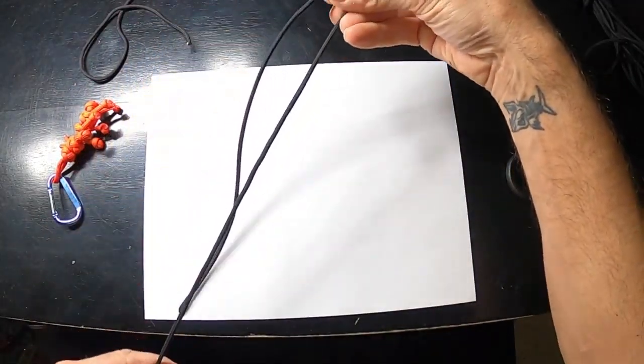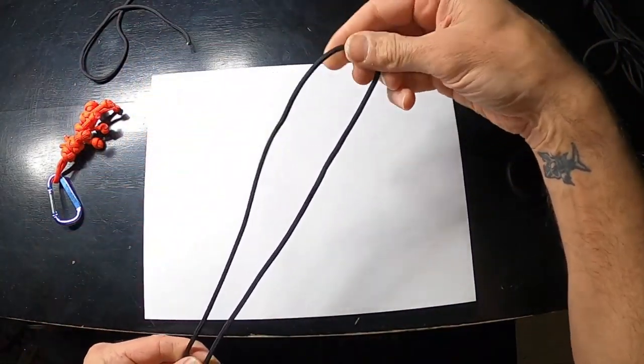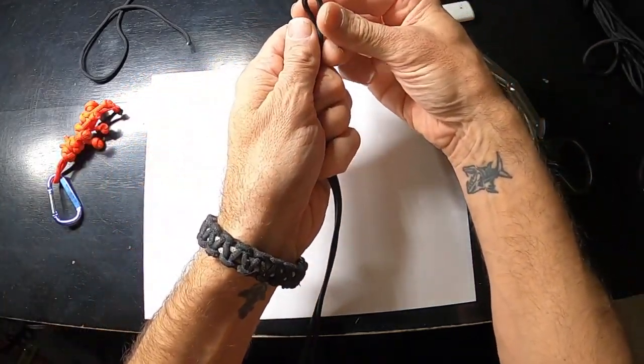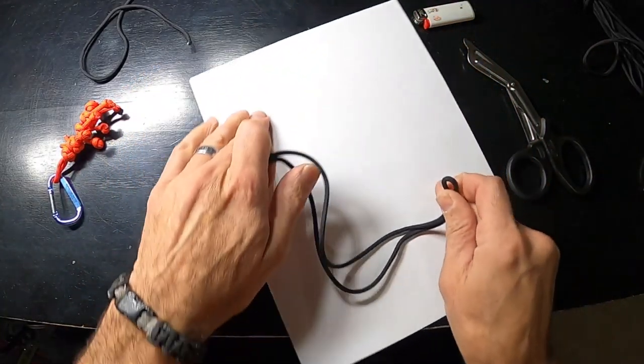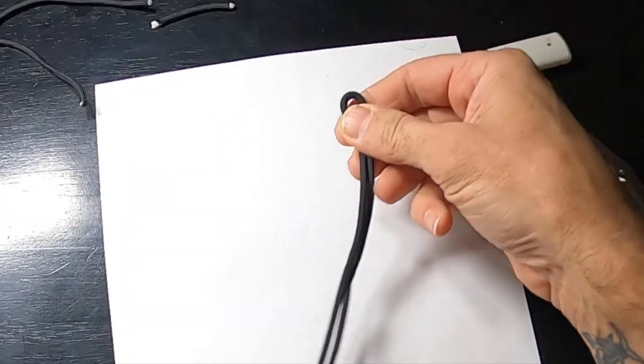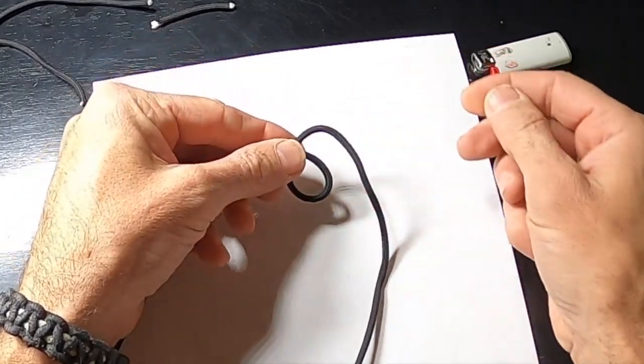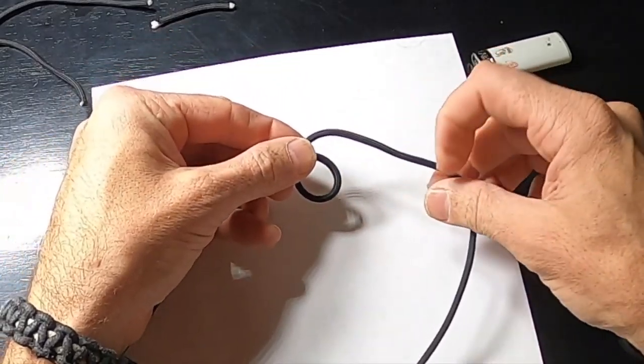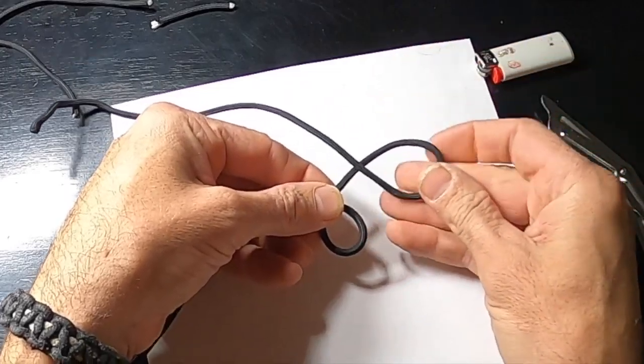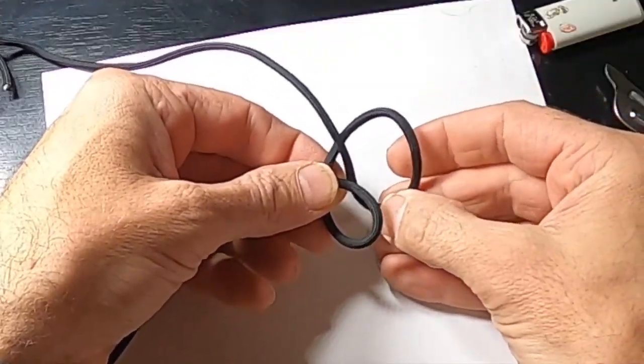Let's take this piece of paracord and make a loop like that. Now twist that underneath and make this loop on top.